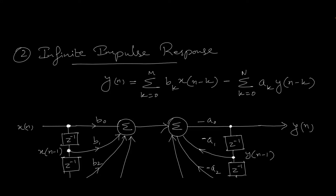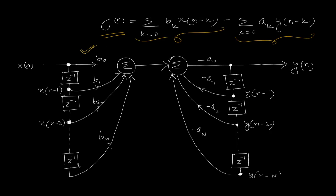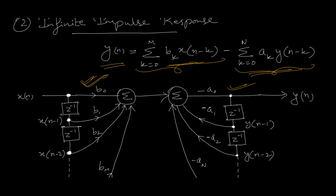For IIR filters — infinite impulse response filters — the output depends on the present and past input values of X(n), but it also depends on the past values of the output Y(n). So we will have two different structures: one for the delayed elements of Y, and another for X(n) and delayed elements of X(n). The first part — the X(n) part — is the same as what we perform for FIR filters, so it will work in a similar way. We produce unity delays, getting X(n-1) multiplied with B1, X(n) multiplied with B0 directly, X(n-2) multiplied with B2, and X(n-M) multiplied with Bm, which get added up at one place.